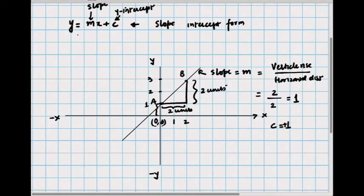That means your line which is represented by this graph can be represented as y is equal to m which is 1x plus 1, or you can write it as y is equal to x. We can simply ignore the 1 coefficient here and 1. So this line is representing the equation y is equal to x plus 1. Simple enough.